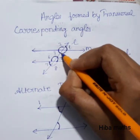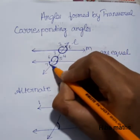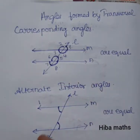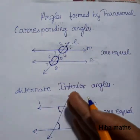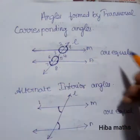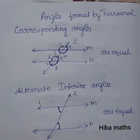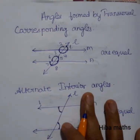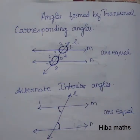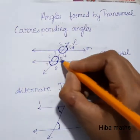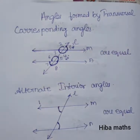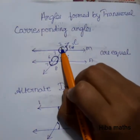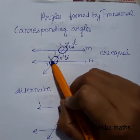Angles 4 and 8 are also corresponding angles. On the right side, 3 and 7 are equal, and on the left side, the corresponding angles are also equal. For example, if one angle is equal to 40 degrees, and angle 2 is 50 degrees, then angle 6 is also 50 degrees.